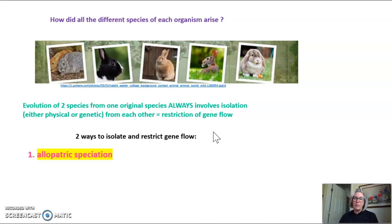One is called allopatric speciation, and this is where you have a geographic isolation. Something in the geography physically isolates two organisms from each other. The other is called sympatric speciation, where there is no geographic isolation. So I'm going to go through briefly each of these two forms of forming two different species from one species.